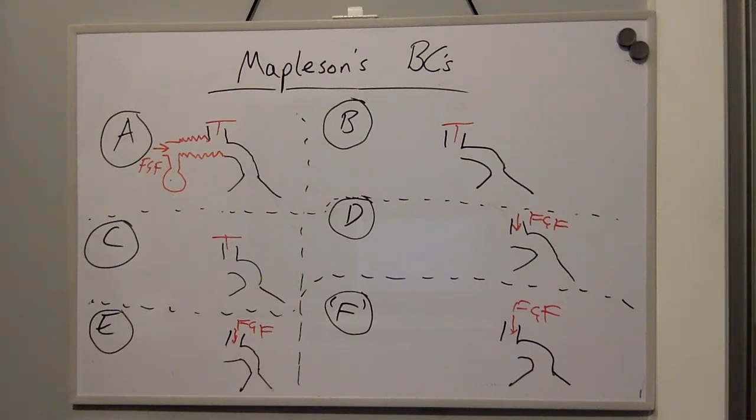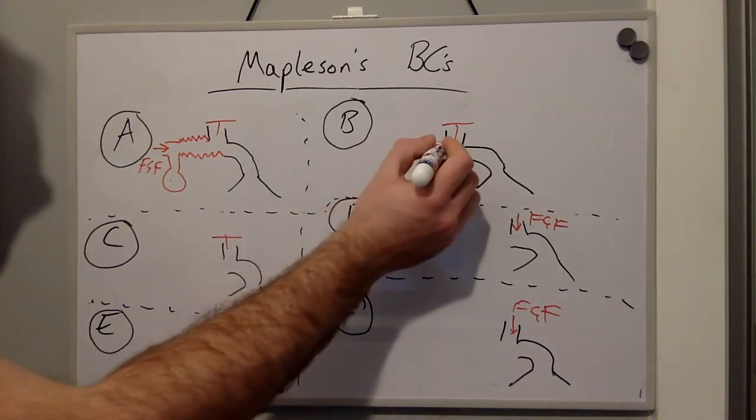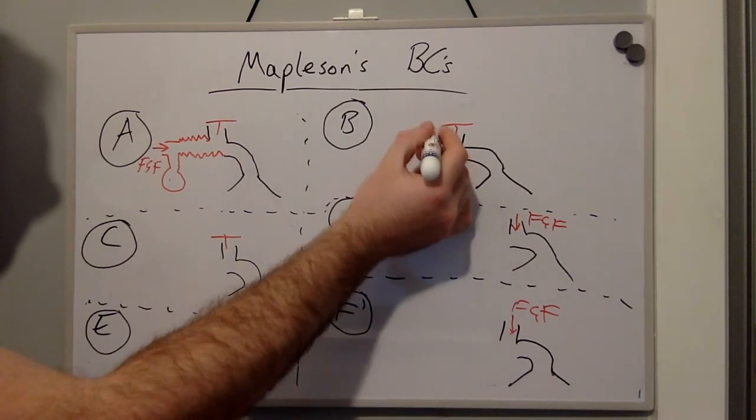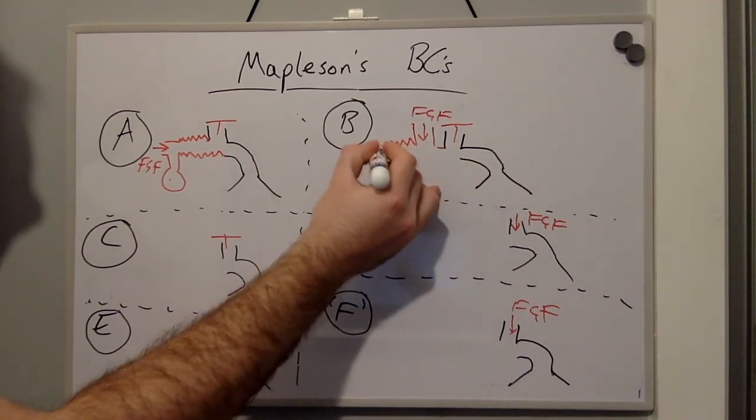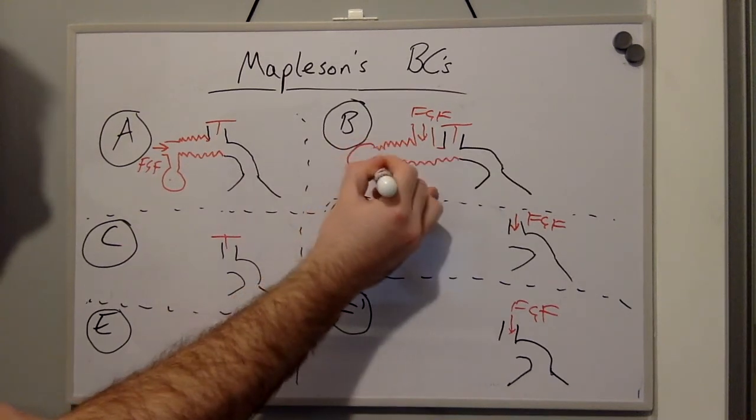The Mapleson B circuit is different because the fresh gas flow will come in to the circuit here. The long tubing will be here and the reservoir bag there.